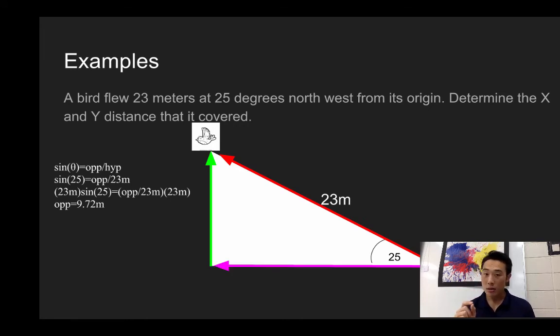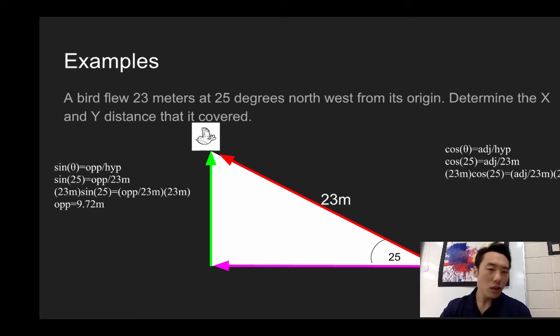All right, now, in order to find the x component, let's think about it, that is adjacent. So, and we have the hypotenuse, so, CAH, right? So, CAH, we use cosine. All right, start with the original equation, fill things in, multiply both sides by 23, and do the math, make sure you're in degree mode, and hopefully, you get 20.85. All right, now, a simple way of doing a little check is by using Pythagorean theorem, okay? A squared plus B squared is equal to C squared, or in numerical sense, you get 9.72 squared added to 20.85 squared, and it should equal 23 squared, okay?